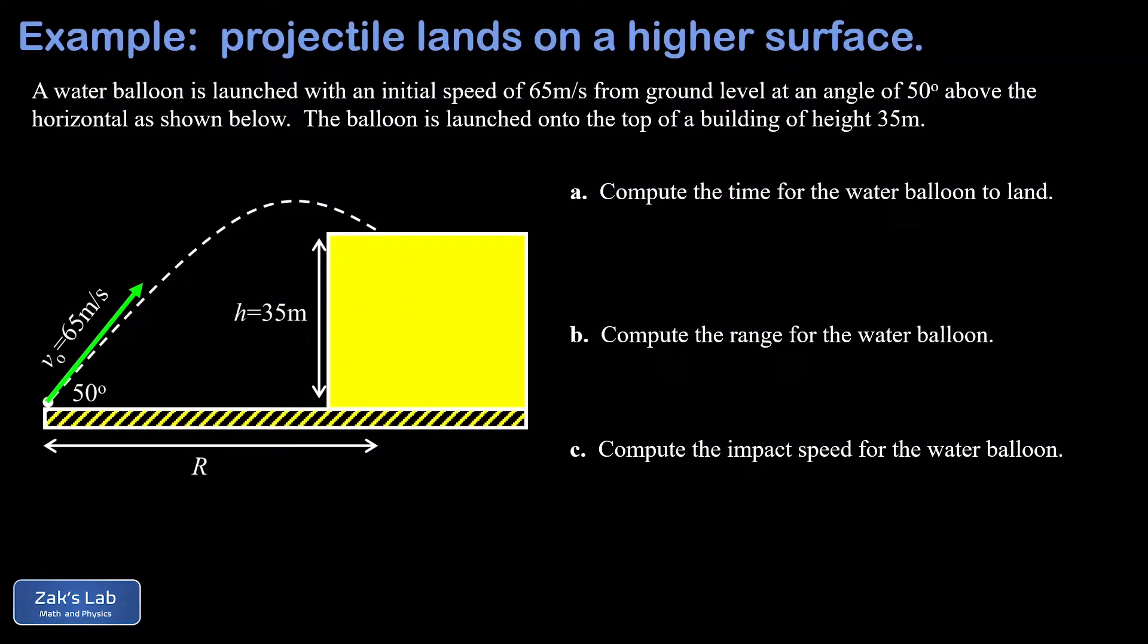In this video, we're looking at a projectile motion problem where the height of the landing is greater than the height of the launch. We're given a water balloon launched at 65 meters per second from ground level. It ultimately lands on top of a building at a height of 35 meters.